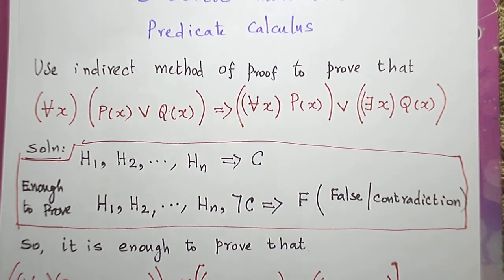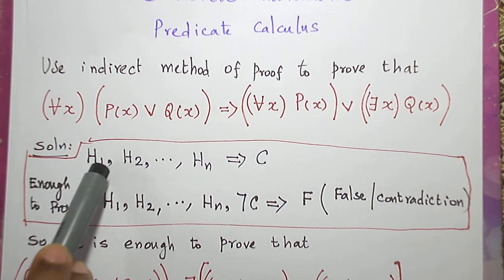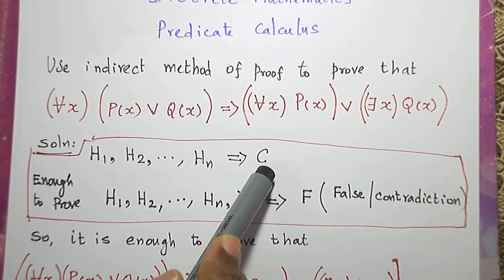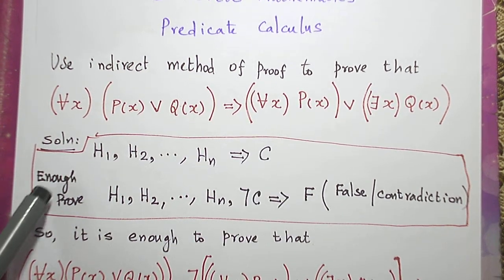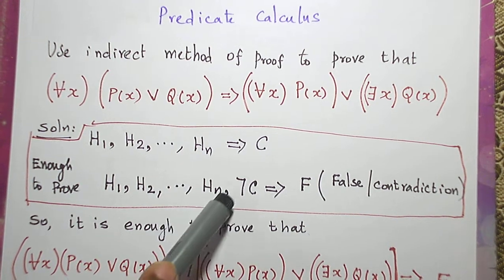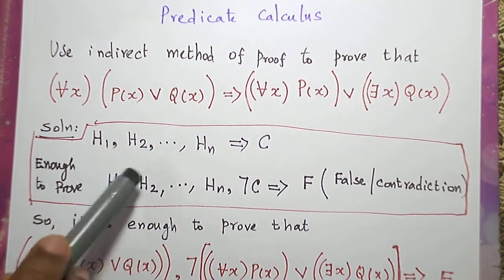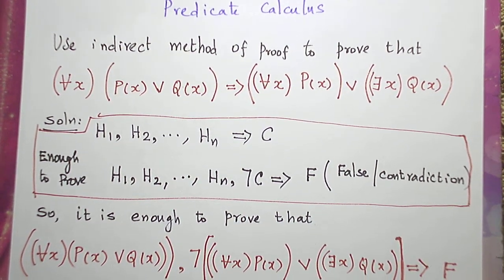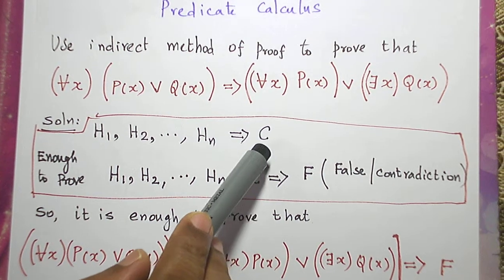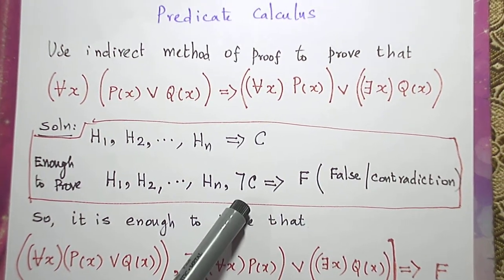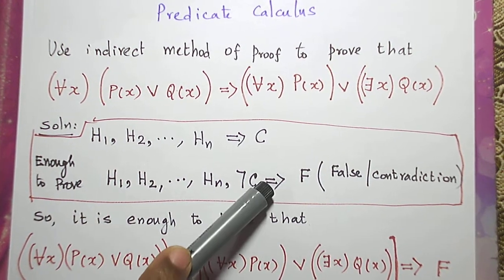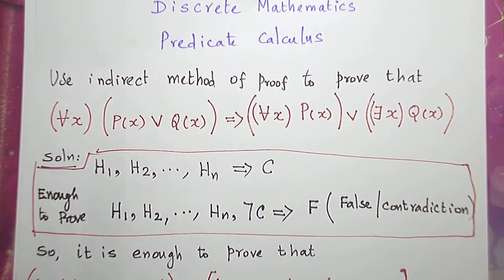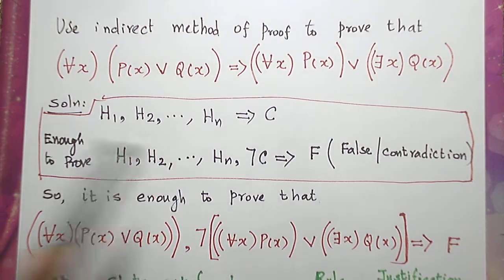So what is the indirect method of proof? Suppose we are having n premises h1, h2, etc., hn that should conclude a conclusion c. Instead of proving that directly, what we do is we take the n premises h1, h2, etc., hn, and along with these n given premises we take the negation of the conclusion as an additional premise. When we combine these n+1 premises logically we should get a false — that is, a contradiction statement.